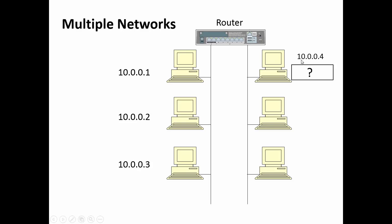The answer is no, because we can't have two networks with the same network ID. None of the computers on the right can begin with a 10. They have to begin with a different number. So I'll select 11 — the first workstation will be 11.0.0.1, and the second will be 11.0.0.2.